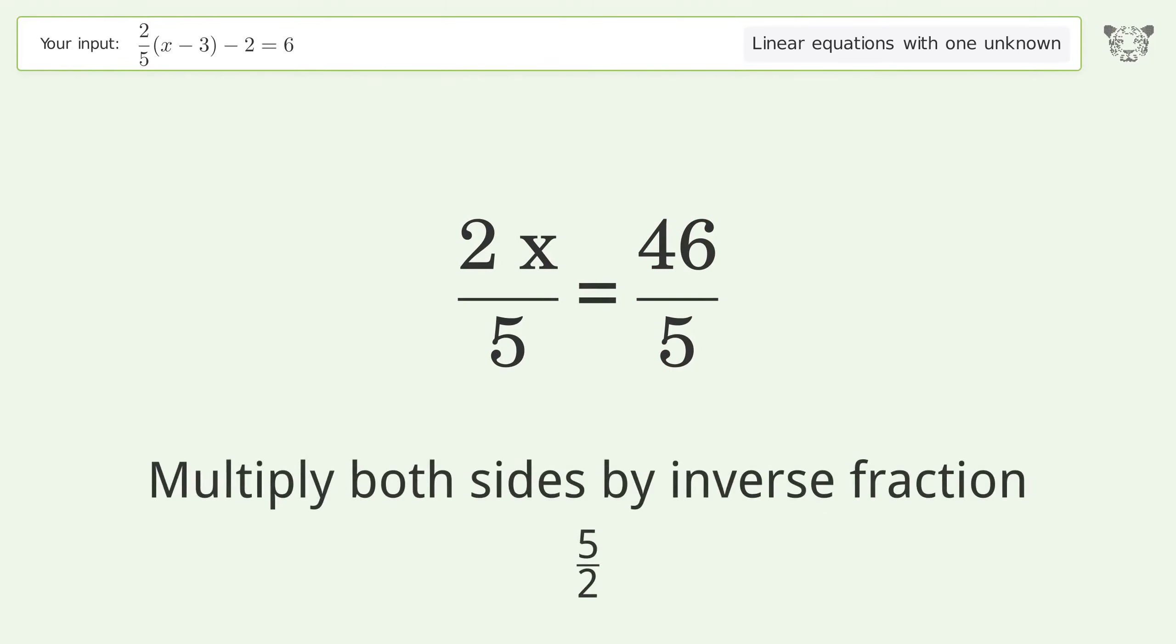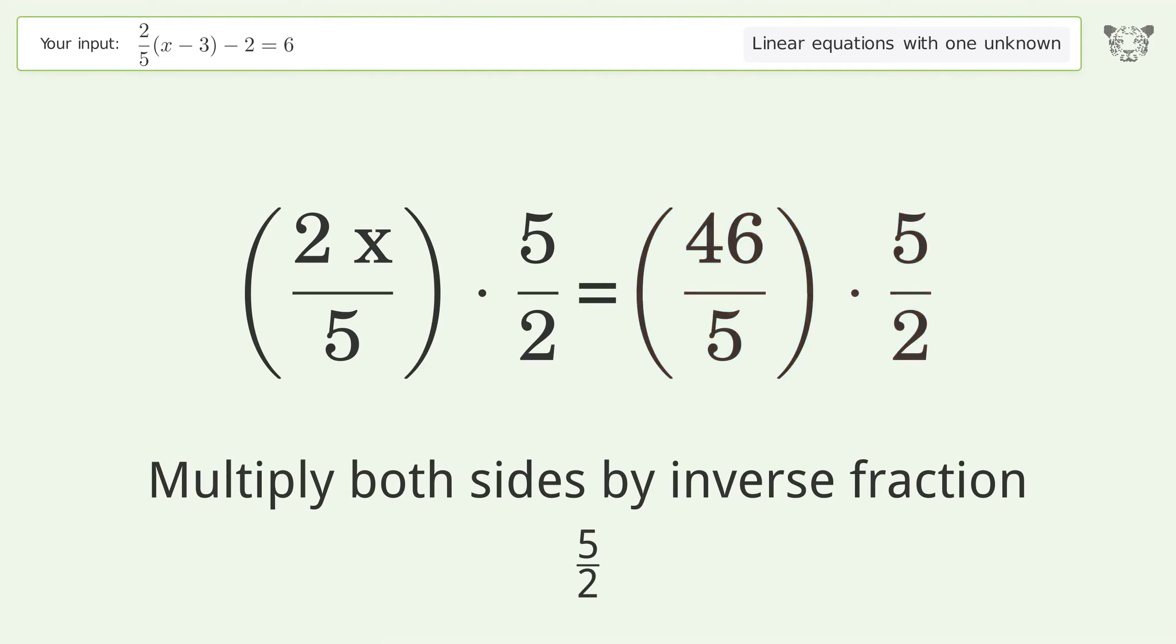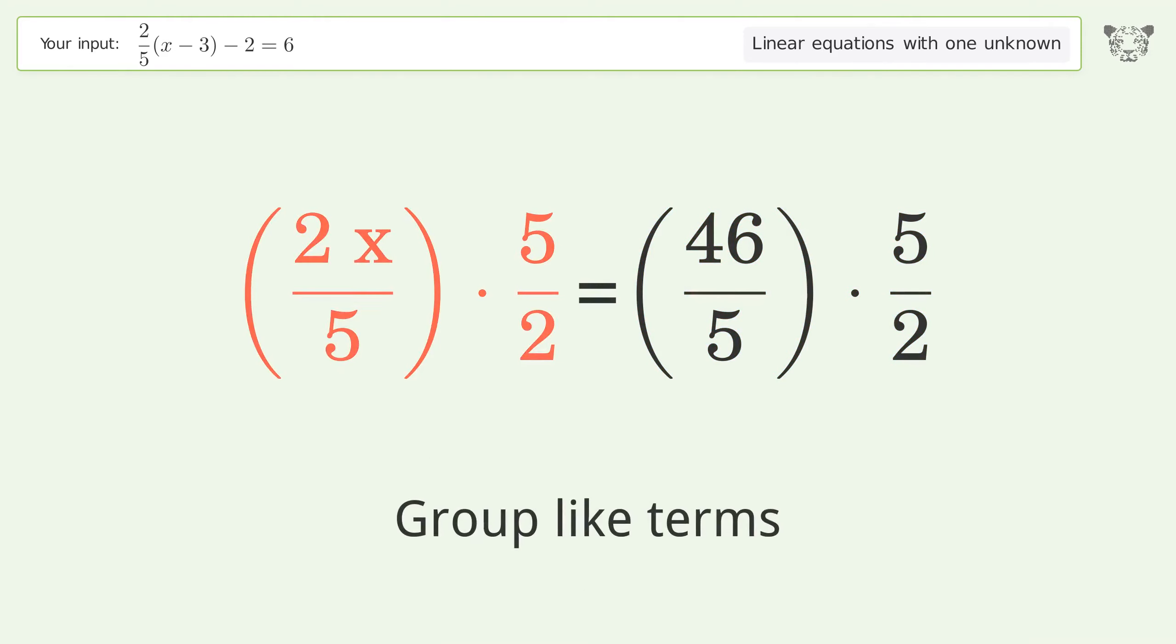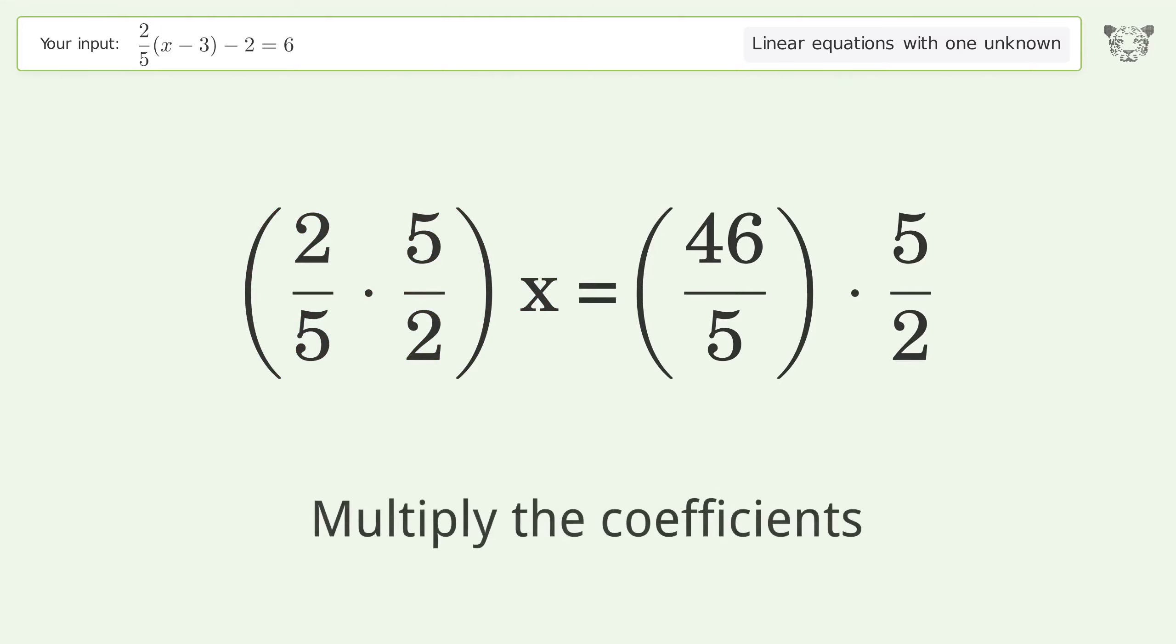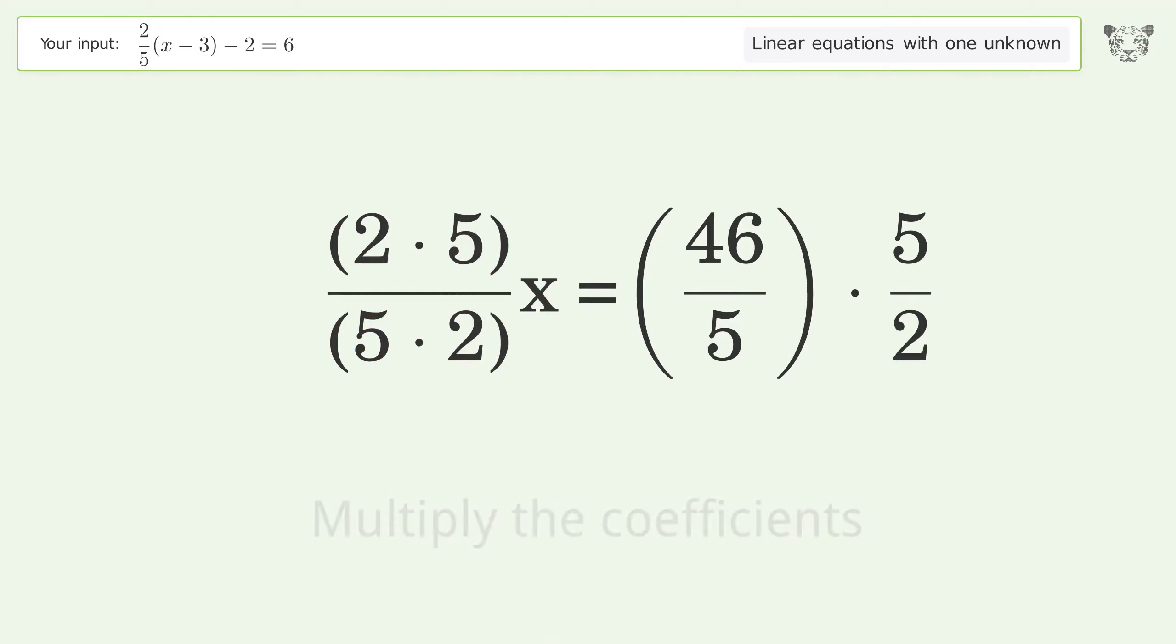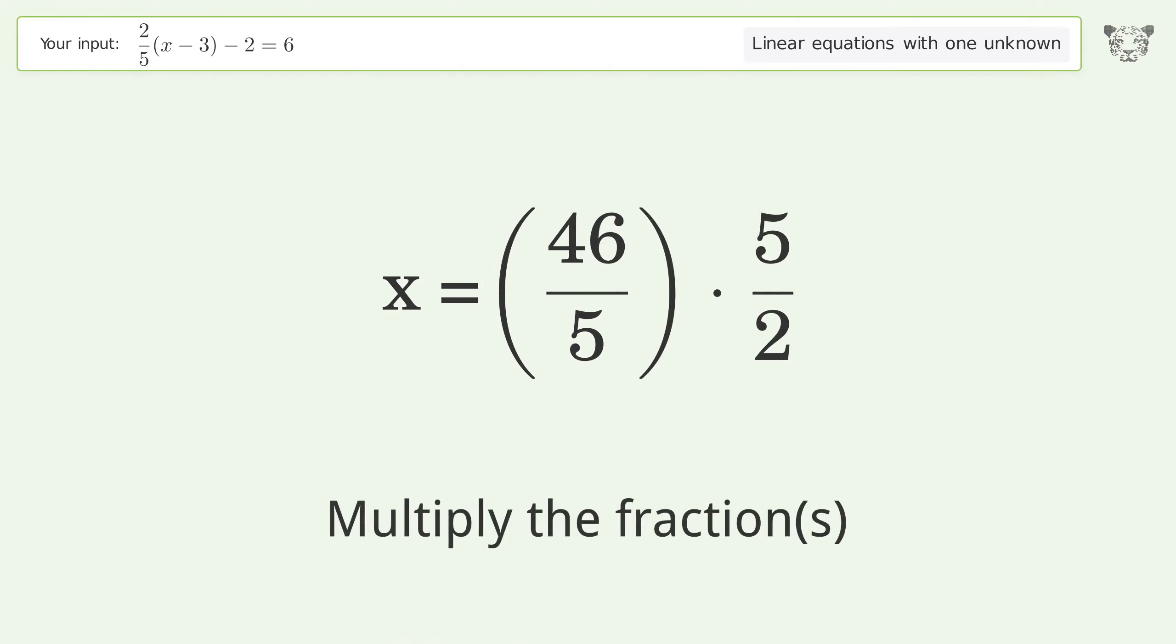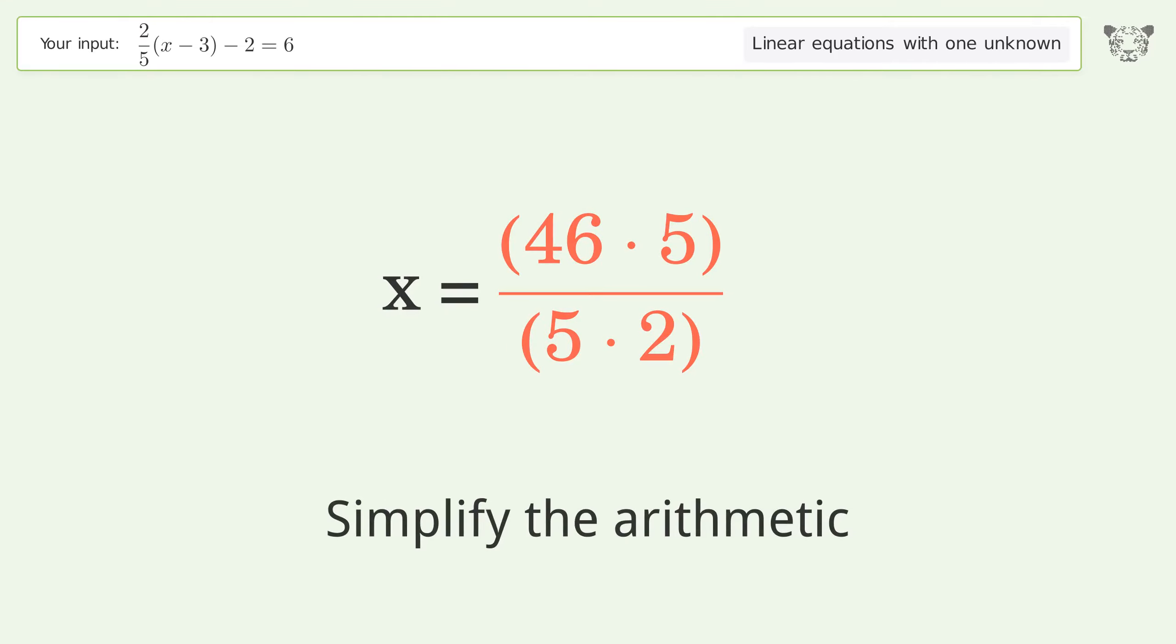Multiply both sides by the inverse fraction 5 over 2. Group like terms. Multiply the coefficients. Simplify the fraction. Multiply the fractions. Simplify the arithmetic.